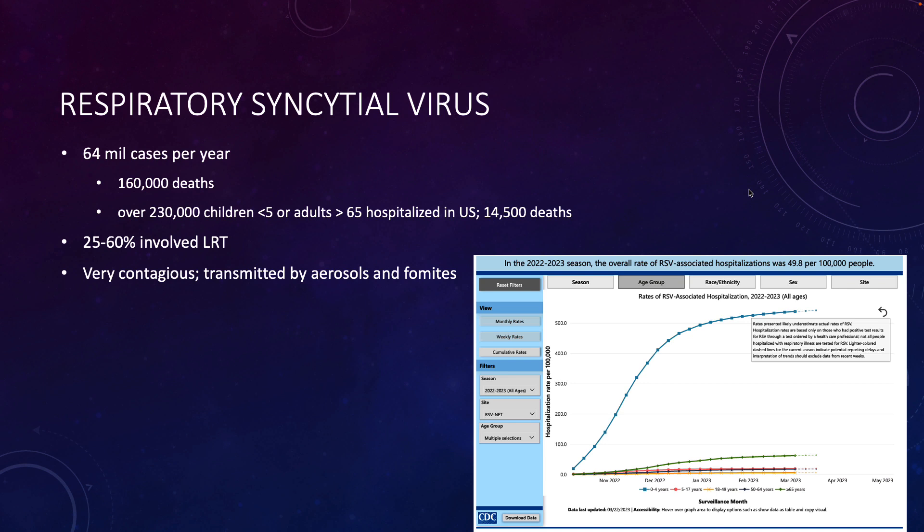The majority of those deaths — around 14,000 — are in elderly patients, but the loss of 14,000 elderly people is nothing to sneeze at, and the loss of 500 children under the age of five is also a big tragedy. Hopefully these vaccines will be very effective, safe, and introduced to the market relatively soon.